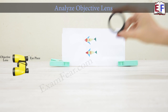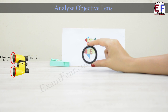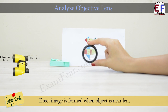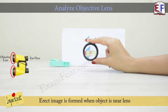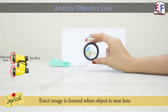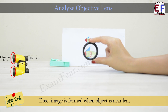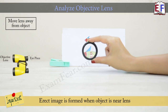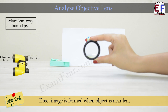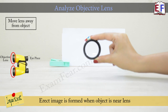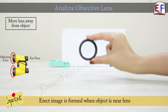Let us first analyze the objective lens. We put the objective lens quite close to the object and just try to observe the type of image that is formed. You need to concentrate on the size of the fish and the direction of the fish. So right now you see an enlarged, erect image of the fish. Now the moment we move this lens away from the object, we would see that the type of image which is formed gets changed.